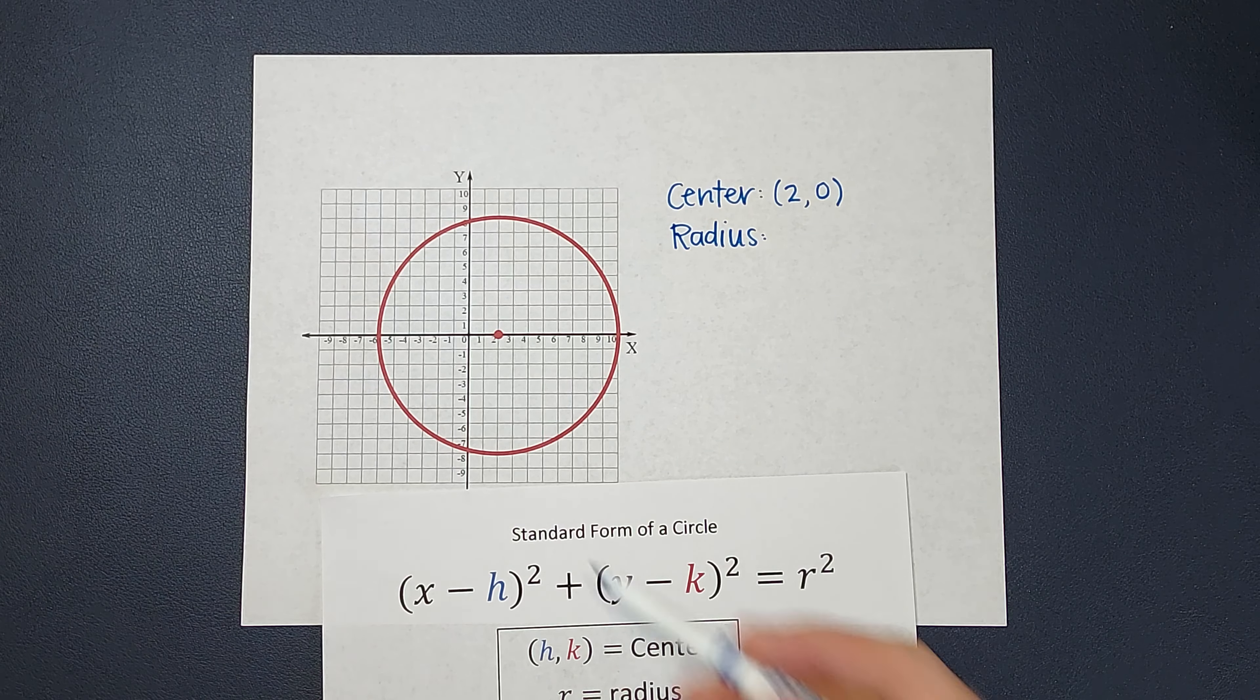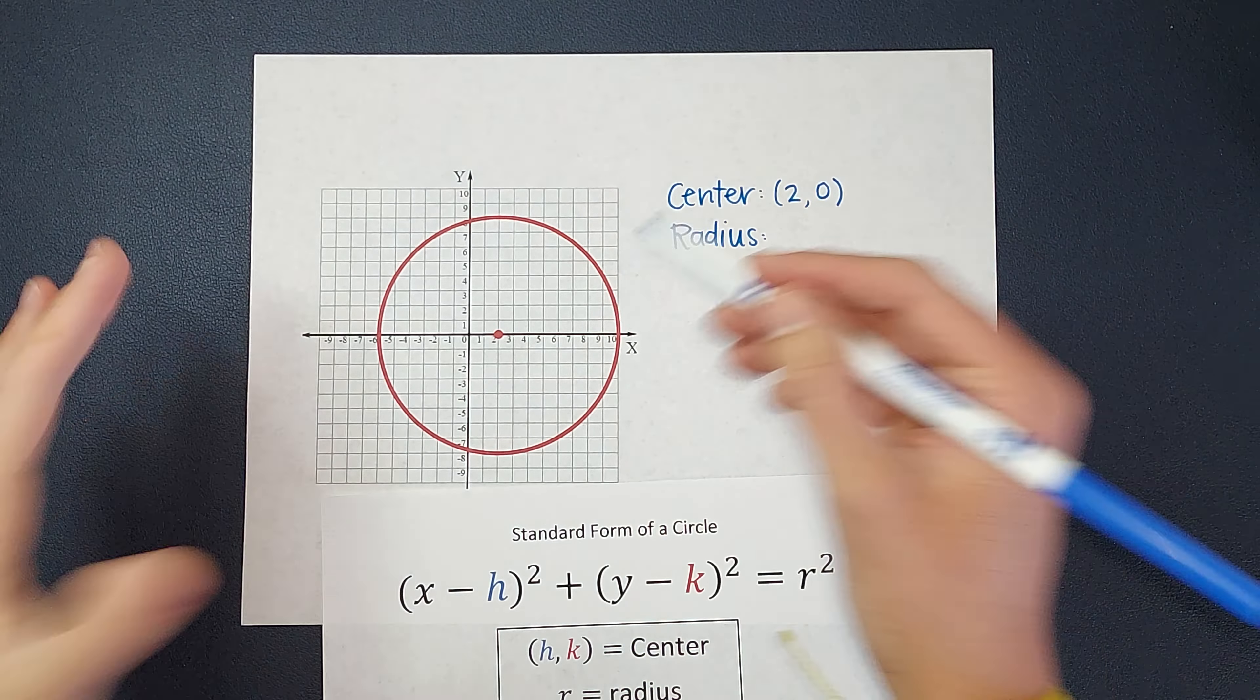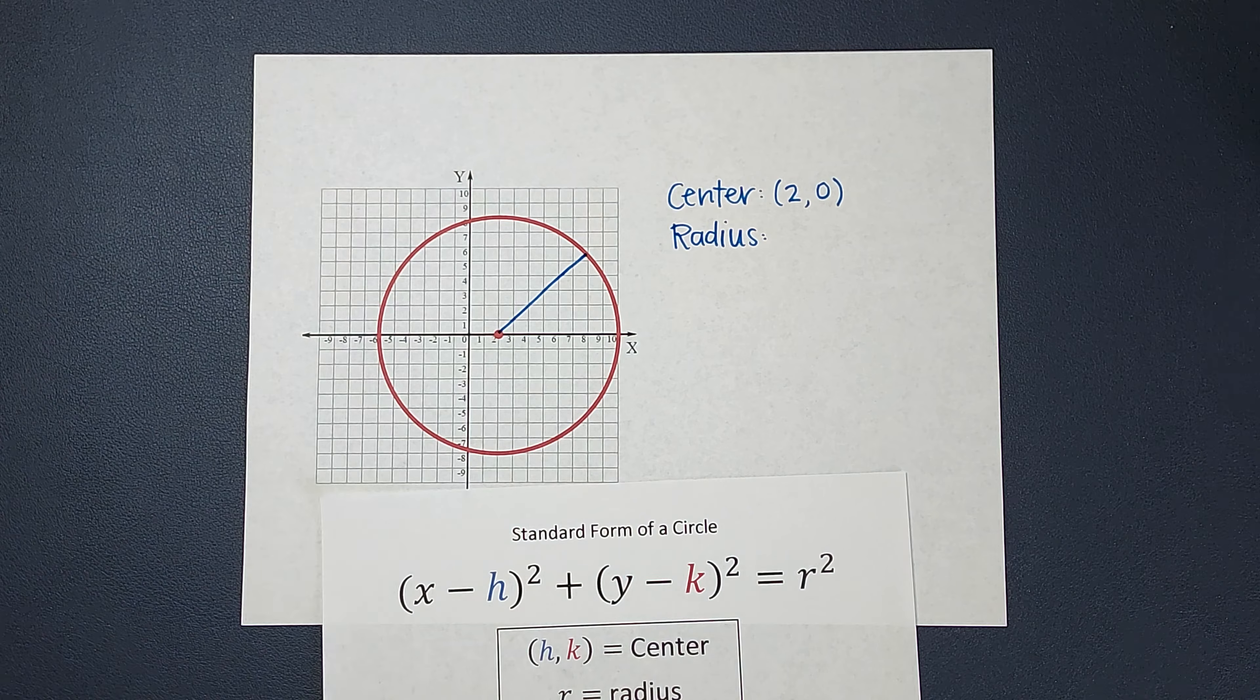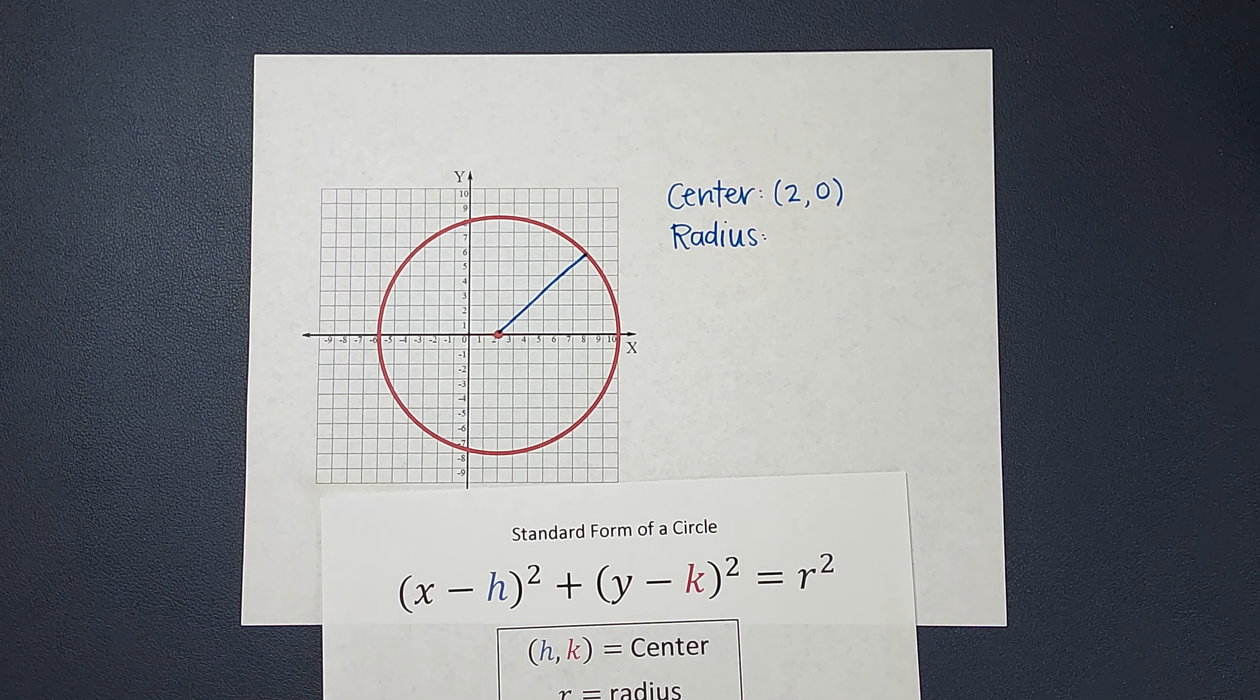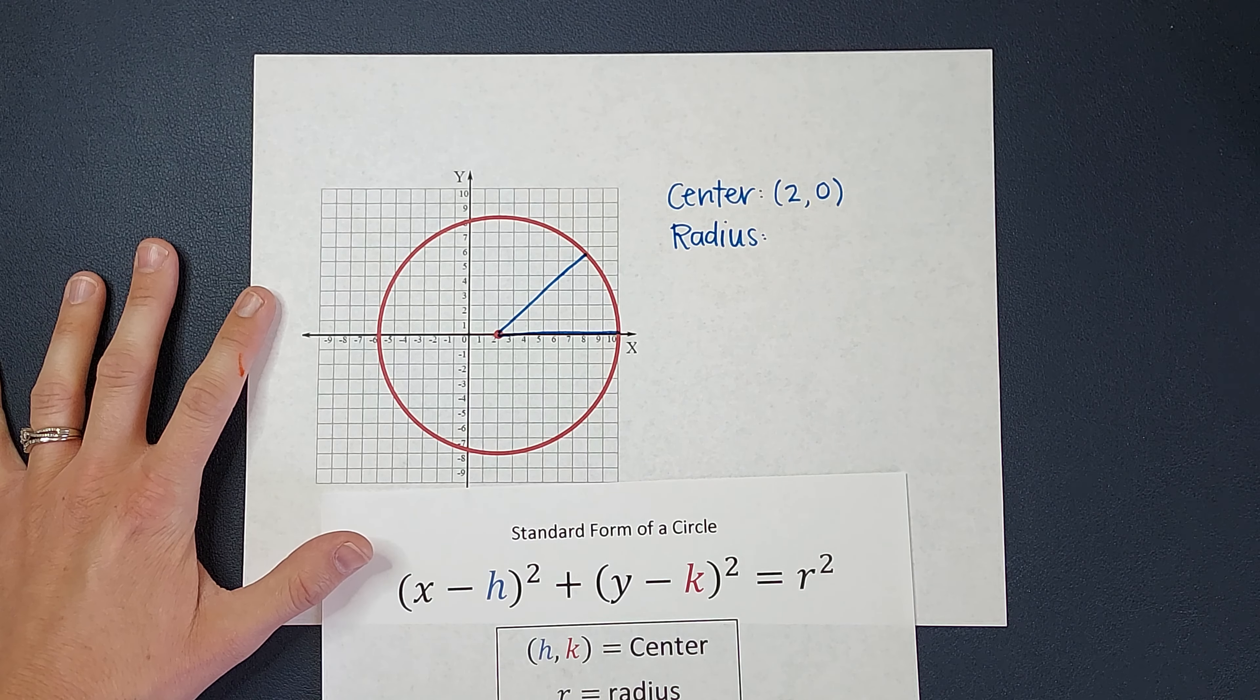Now my radius goes from the center to the edge of the circle, and it can be in any direction. It could be like this, but for this example, the easiest way to get it is to just count the flat line.